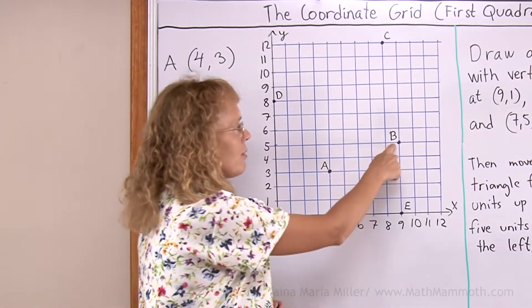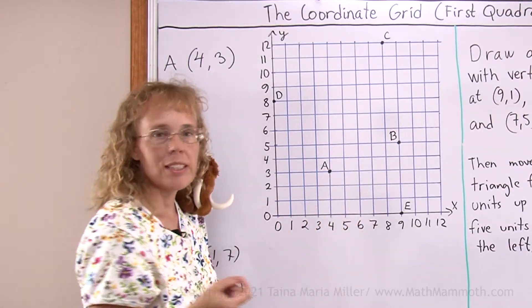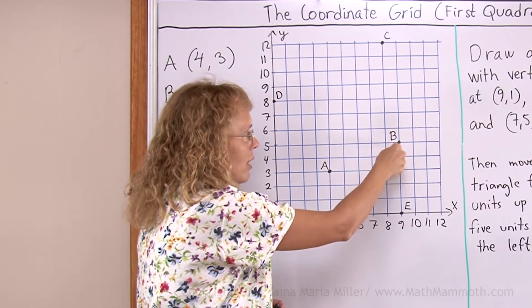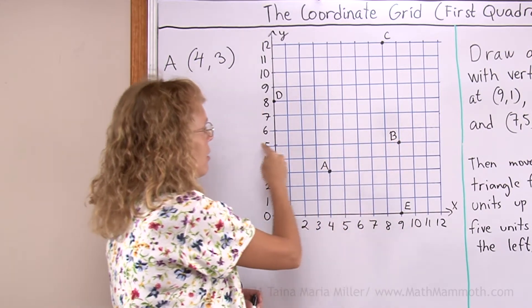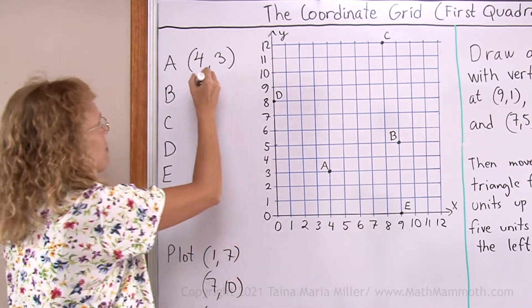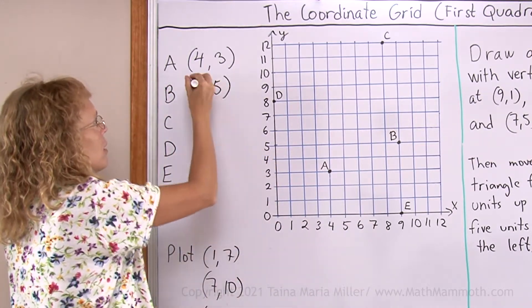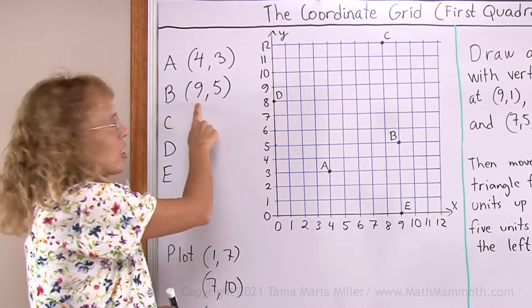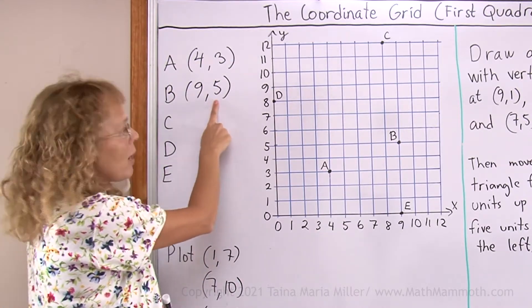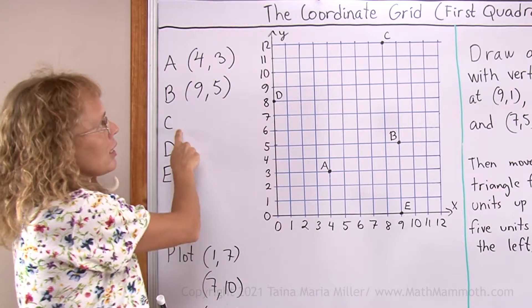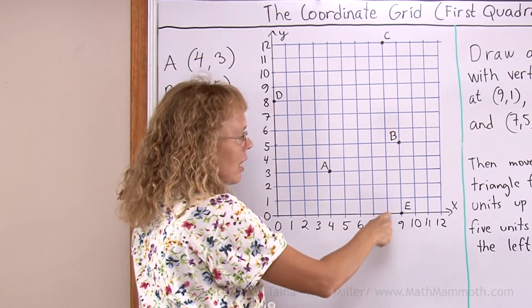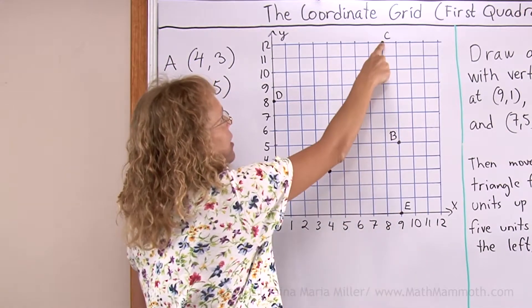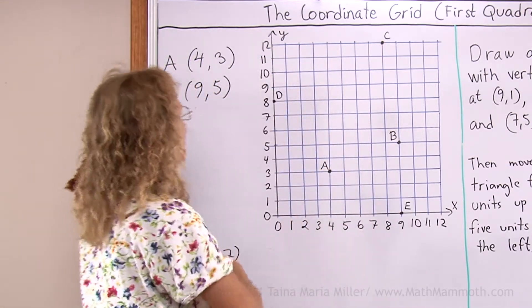Point B is over here so to find its coordinates I look down from point B towards the x-axis. It is 9, then over here 5. Point C way up there, just look first to the x-axis here, 8, and then over here 12.